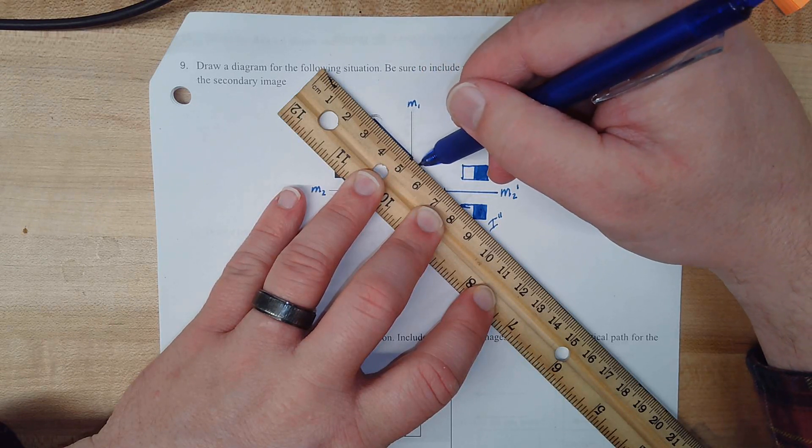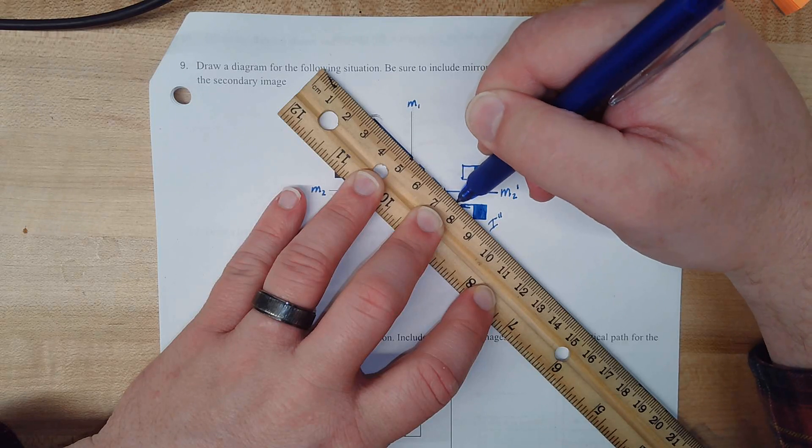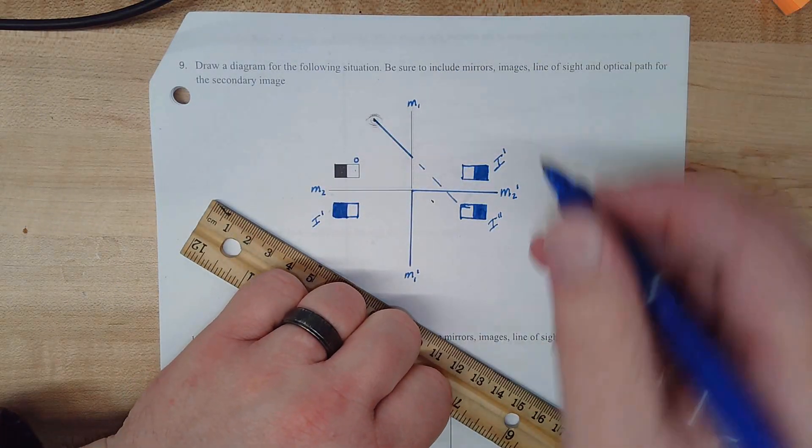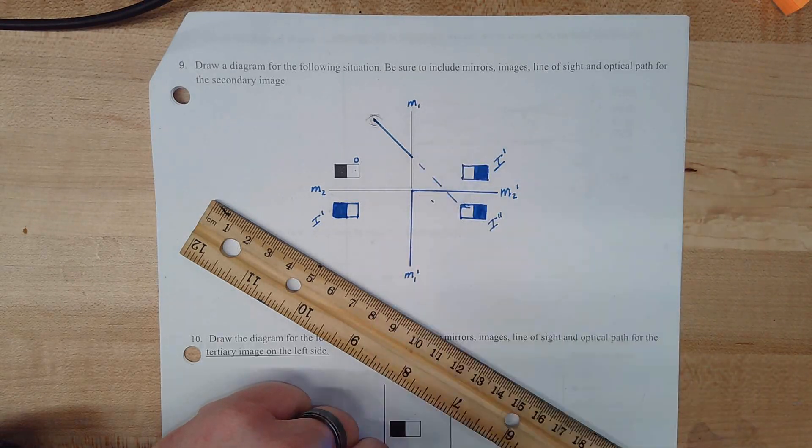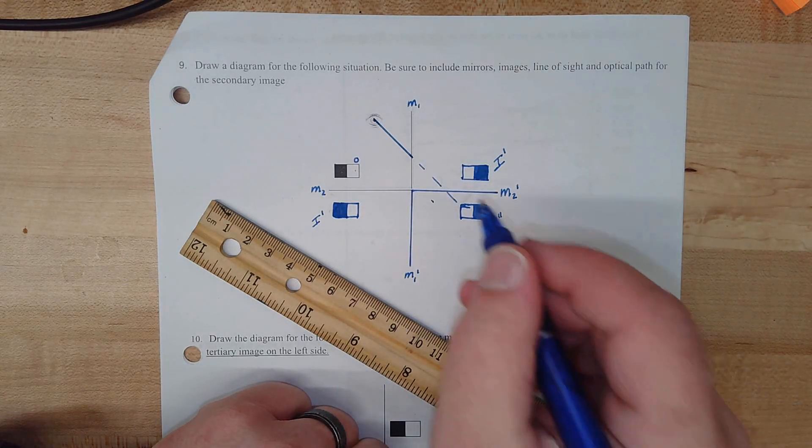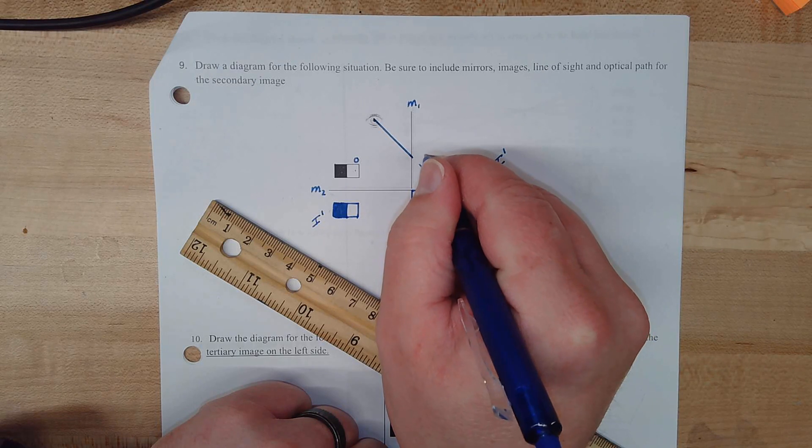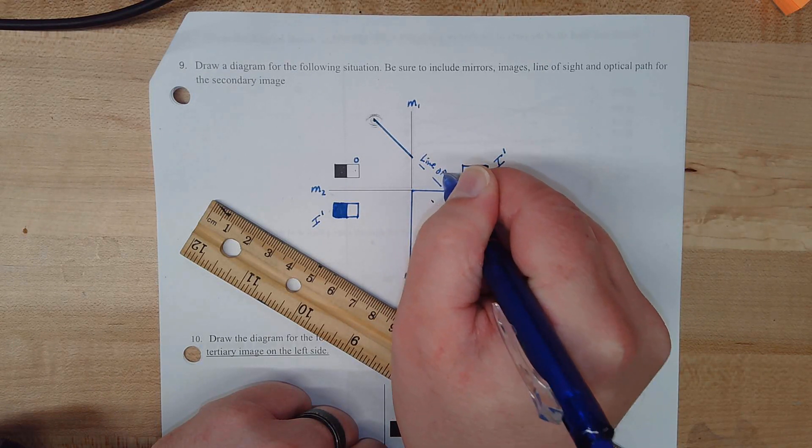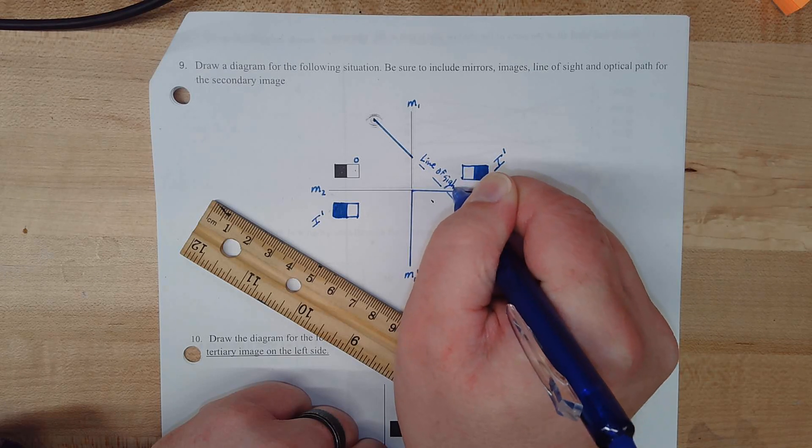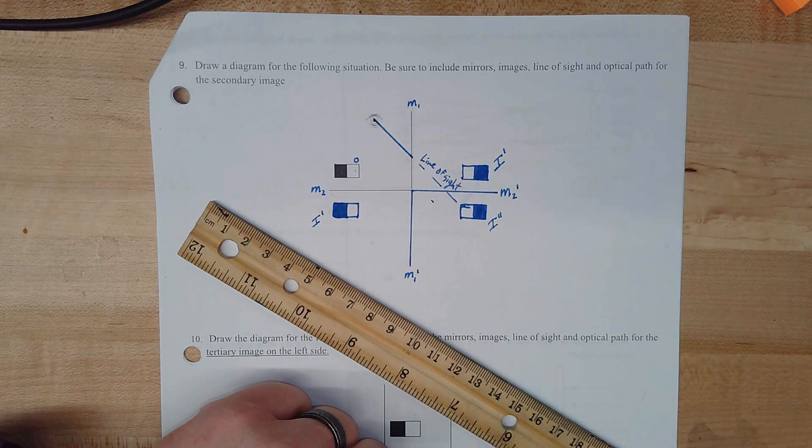We're going to start out with a solid line from the eyeball up to the mirror. Then, after the mirror, we're going to draw a dotted line because we're now in imaginary space. This space doesn't exist. It's inside the mirror. But our brain says, hey, there's stuff back there. So it's imaginary. We're going to label that the line of sight.